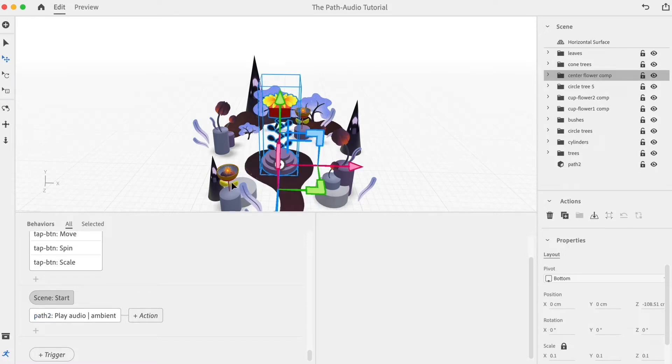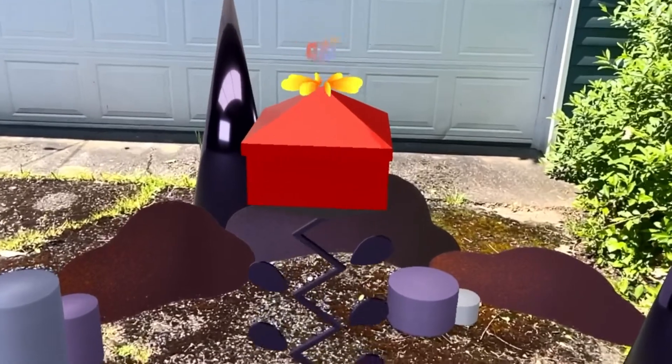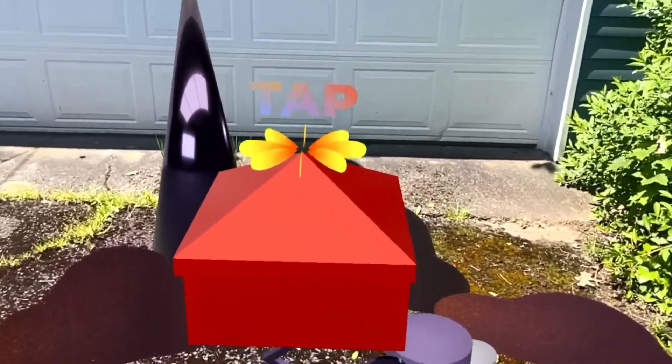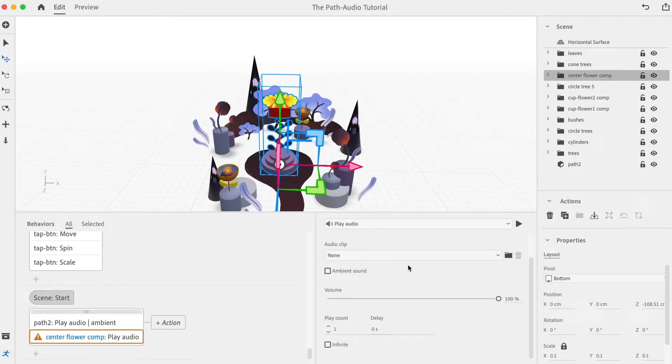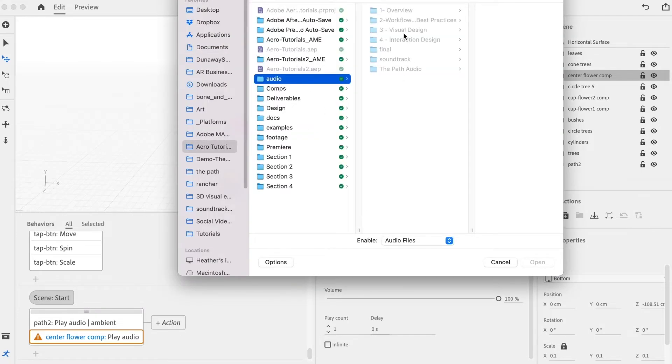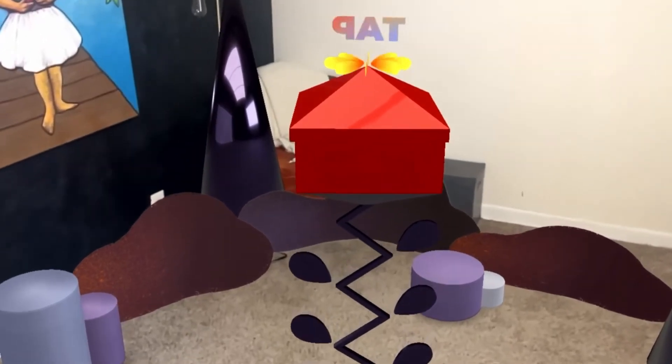Now, I want to use some audio to help direct the participant to the central flower. This is where the main interaction takes place, so I want them to feel instinctively drawn to it. So I'll select the flower. Then I will create a new play audio action. I'll click on the folder and direct it to the flowers track. I'll select infinite, but I won't select ambient this time because I want it to be spatially located.